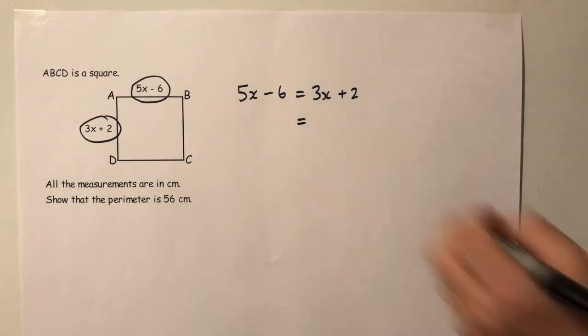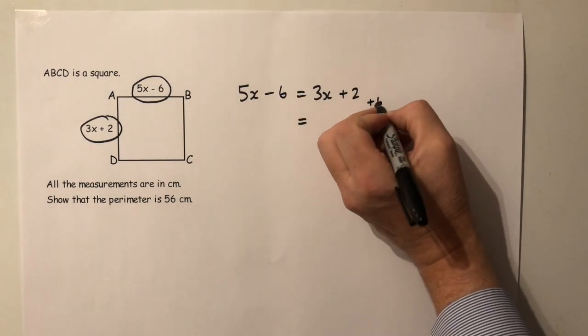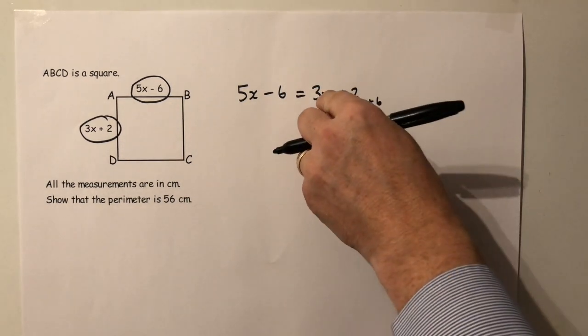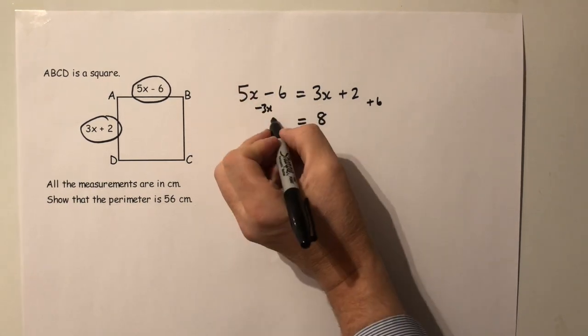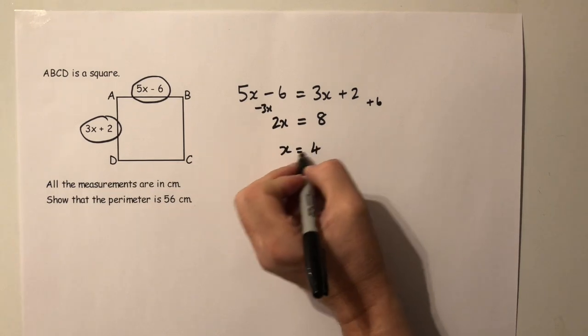To solve this equation, I bring the 6 over to this side as a plus 6, so therefore I've got 8 on that side. I take the 3x onto this side, which means I've got 2x on this side. So x must be 4.